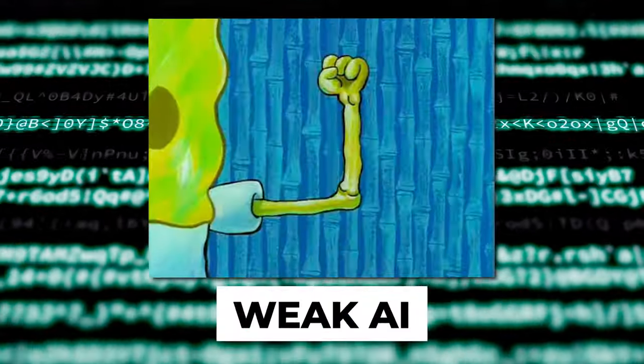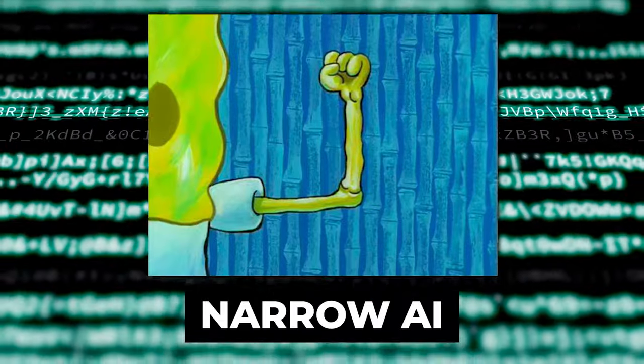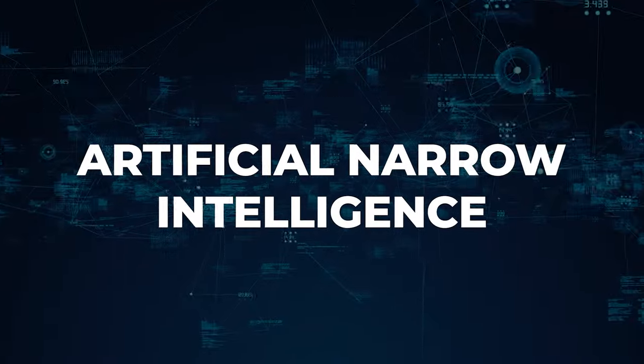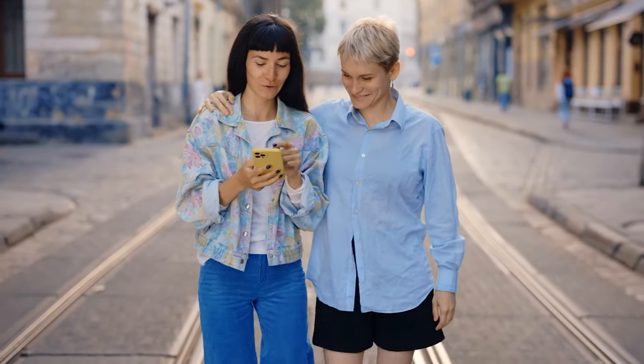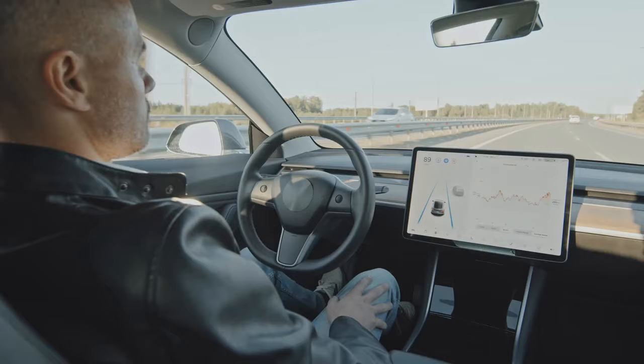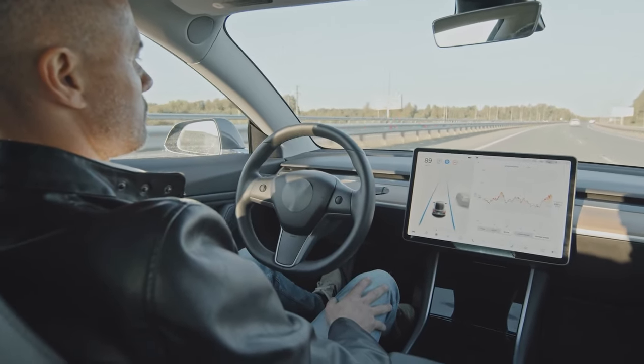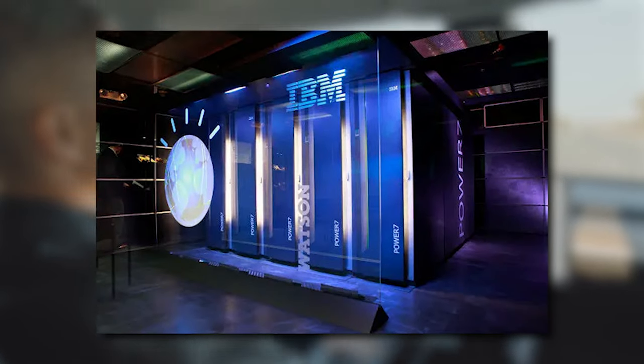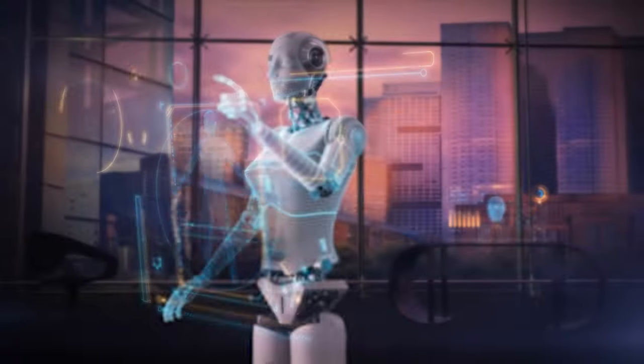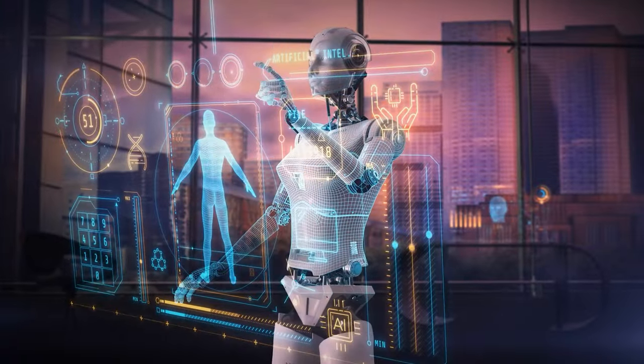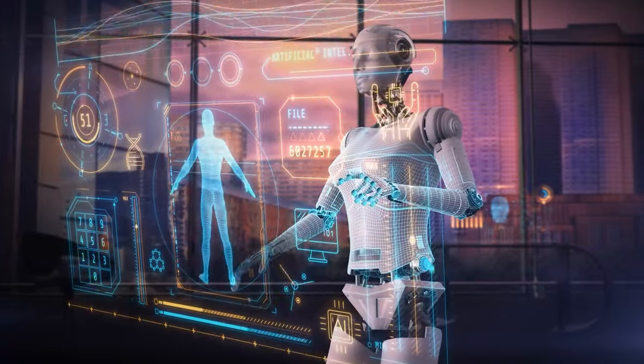First, there is weak AI, also known as narrow AI, or artificial narrow intelligence, ANI. This form of AI is ubiquitous in our daily lives, powering everything from self-driving cars to IBM Watson. Despite its name, weak AI is far from feeble. It is highly focused and excels at accomplishing specific tasks without question.